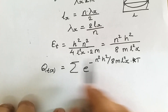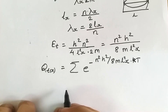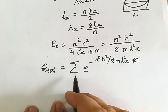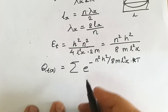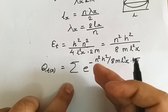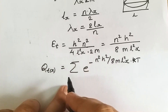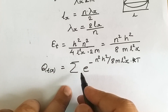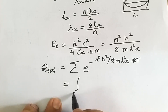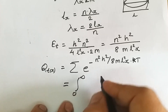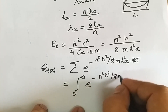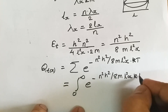All the energy levels are very closely spaced — there is very little separation between individual energy levels, so we can say the energy levels are continuous. When energy levels are continuous, the summation term can be converted into integration. We convert the summation to an integral from zero to infinity of e raised to minus n squared h squared upon 8mL_x squared kT dn.